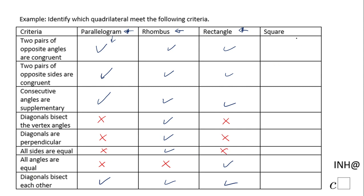Now the last special quadrilateral: the square. A square is a special type of parallelogram, so all four base properties are true. Diagonals bisect the vertex angles — yes, because a square is also a special type of rhombus. Diagonals are perpendicular — yes, for the same reason. All sides are equal — yes. All angles are equal — yes.